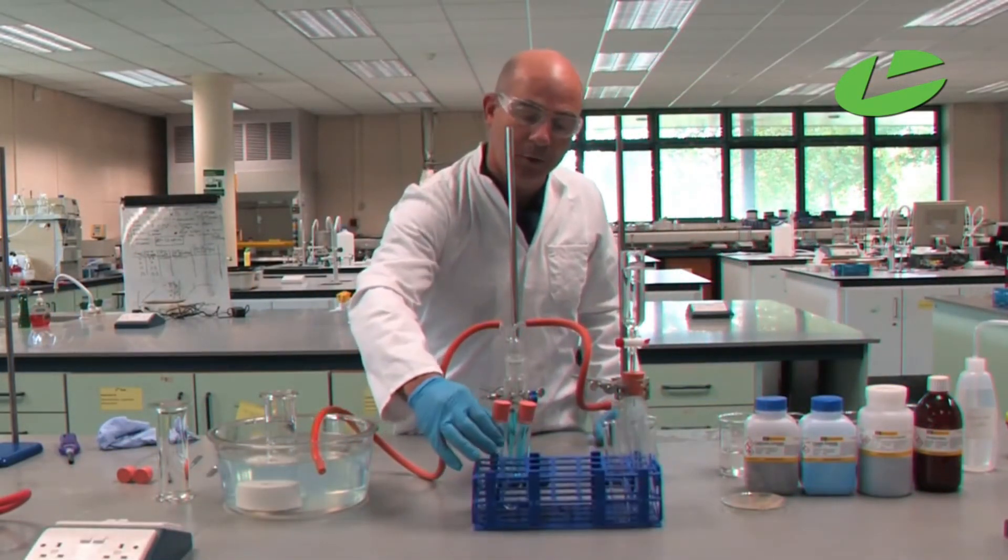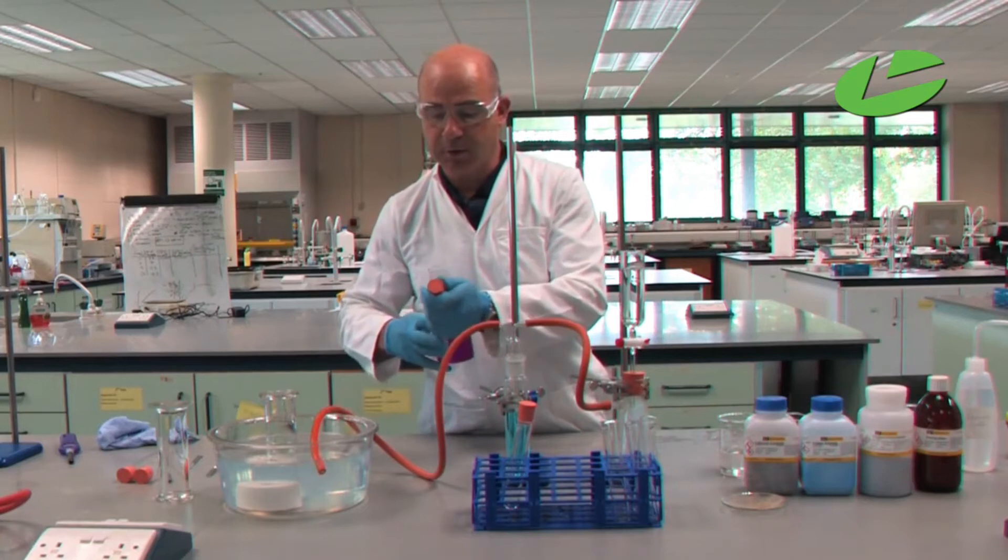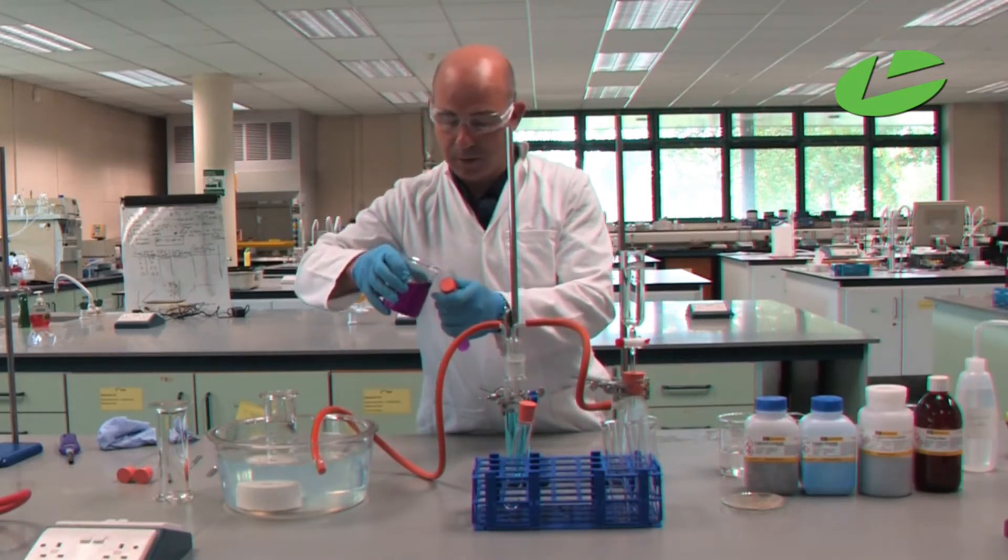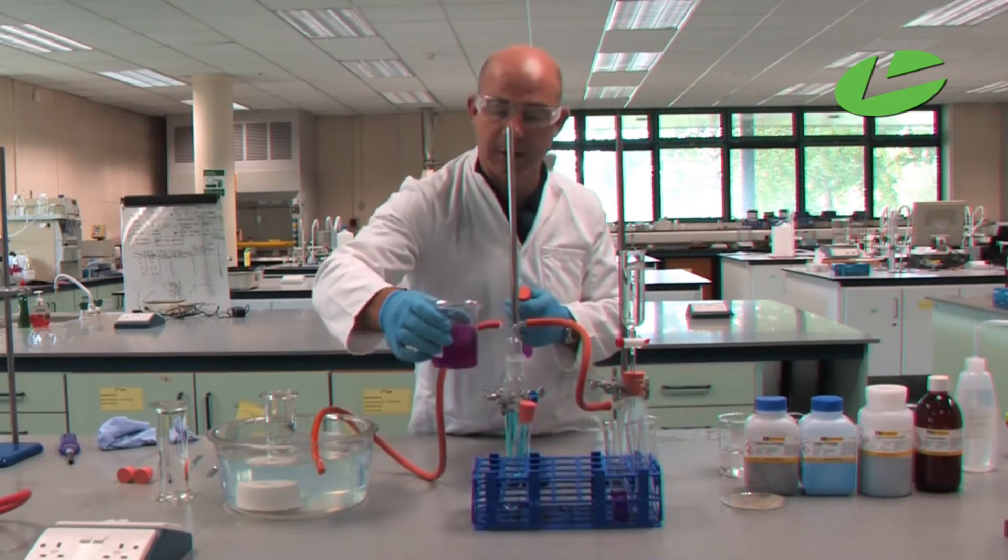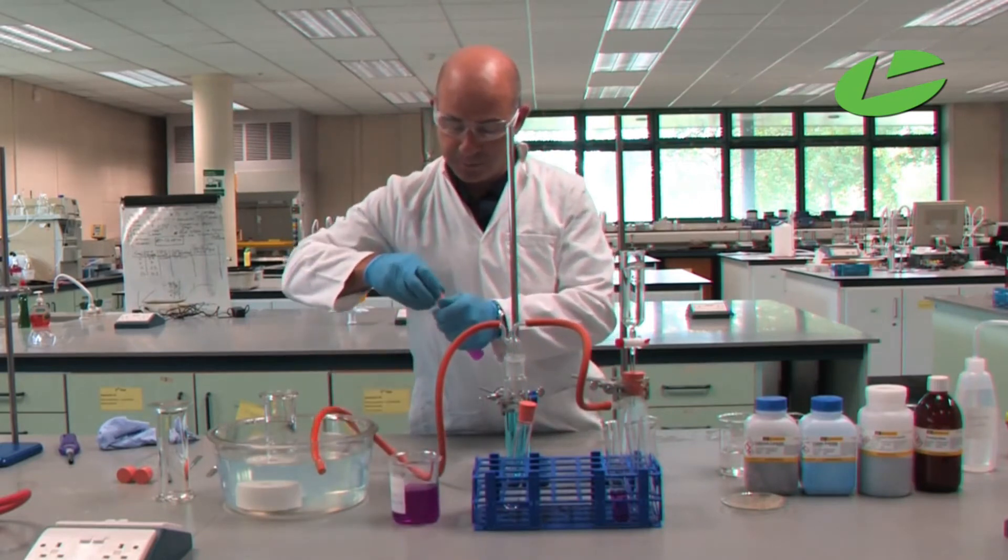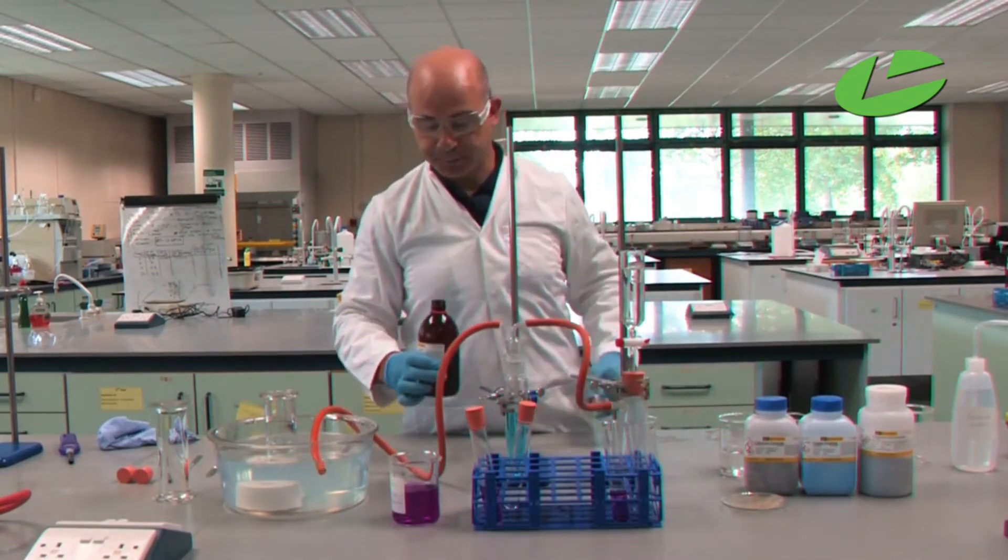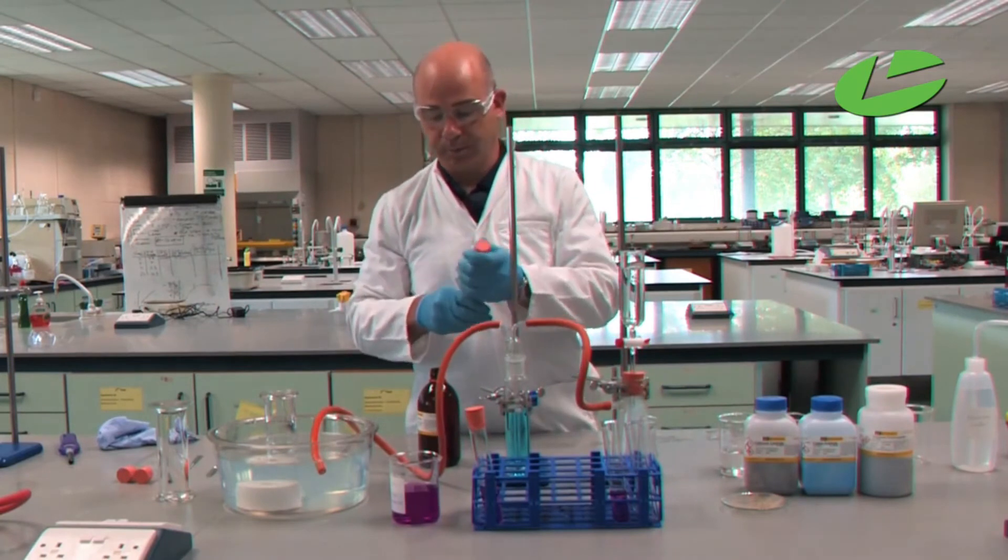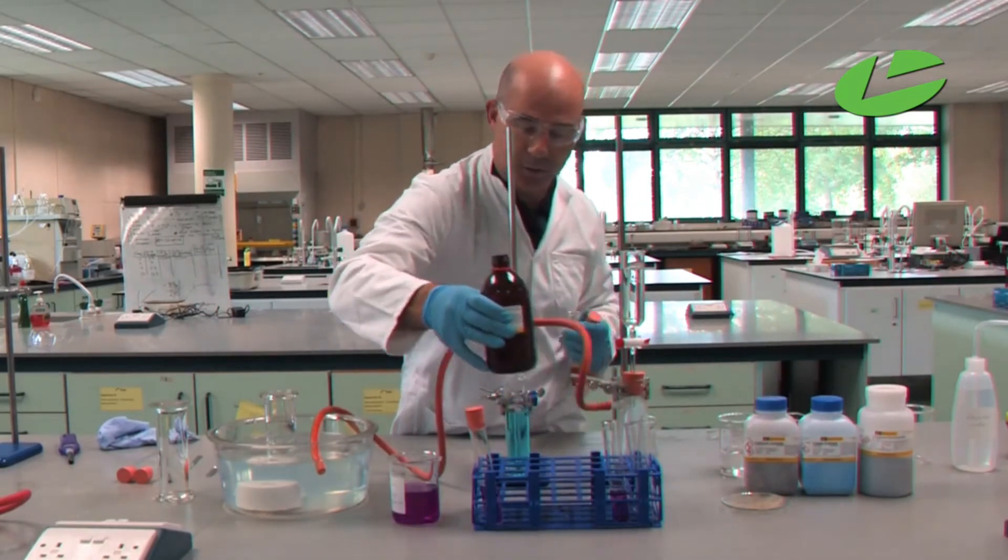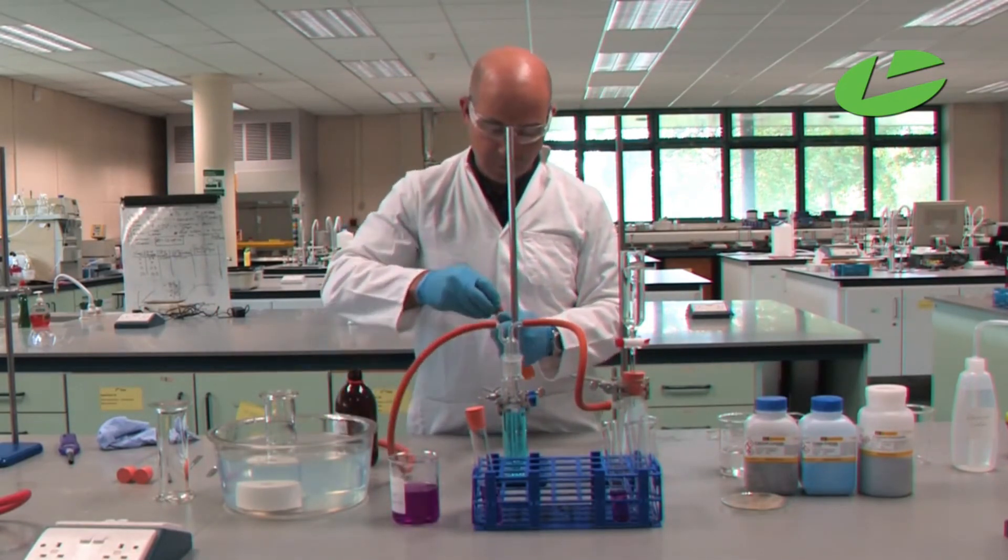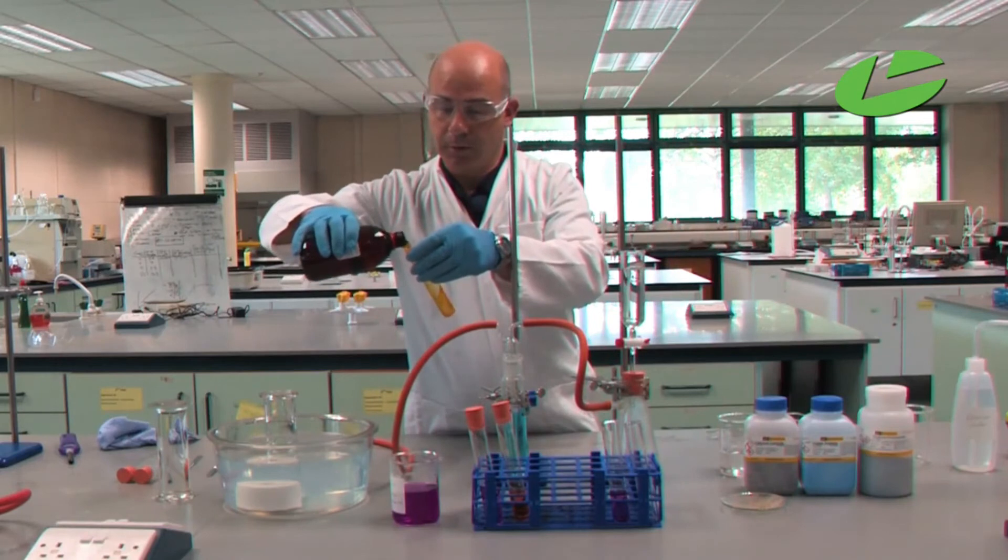In test tube one, add acidified potassium permanganate, this purple solution. It's advisable to have a test tube as well to show the color before the reaction. In another test tube, add bromine water. Prepare test solutions so you can see the colors beforehand.